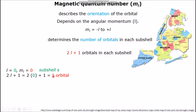If electrons are present in sub-shell S, then the L value is 0. That means ML is just 0. The number of orbitals in sub-shell S is simply 1, as determined by this formula. And that means the electron is only present in this one orbital contained within sub-shell S.